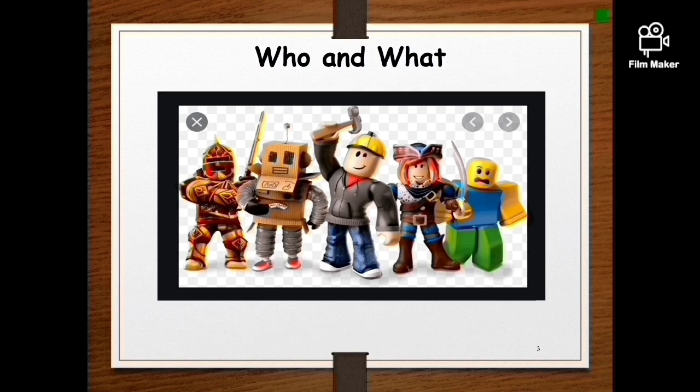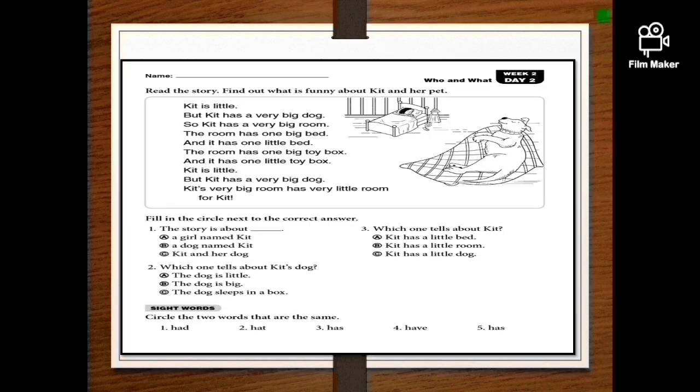What means what did the character do. Read the story to find out the main character and what did they do. Or you can say, who and what in the story. So let's read and find out. Read the story. Find out what is funny about Kit and her pet.